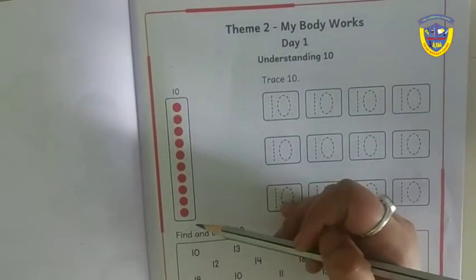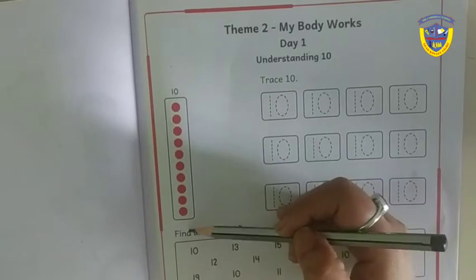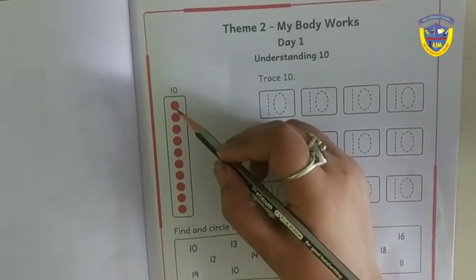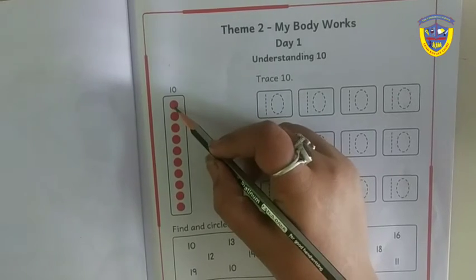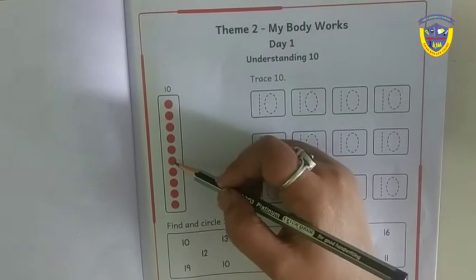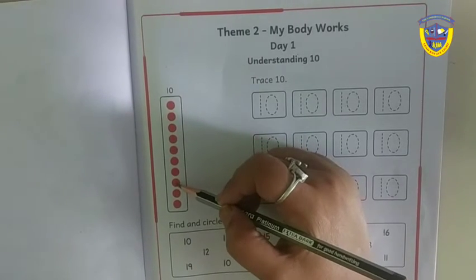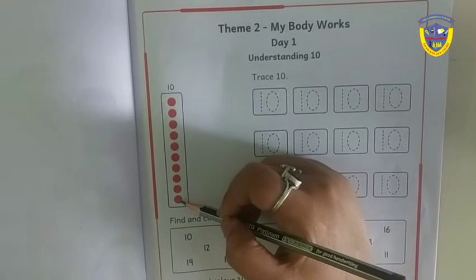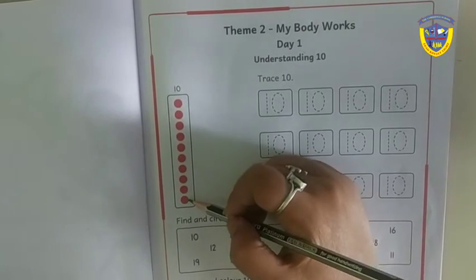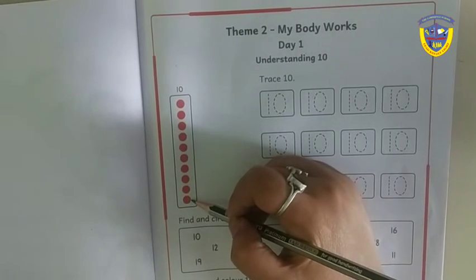Students, here we have one ice cream stick with 10 dots. You also count with me. So let's start counting. 1, 2, 3, 4, 5, 6, 7, 8, 9, 10. Students, one stick of 10 is 10. Okay.